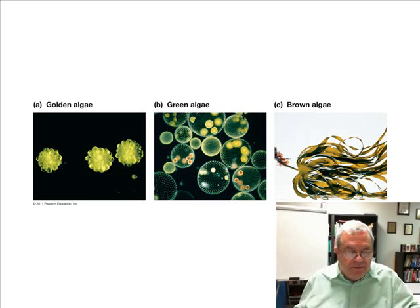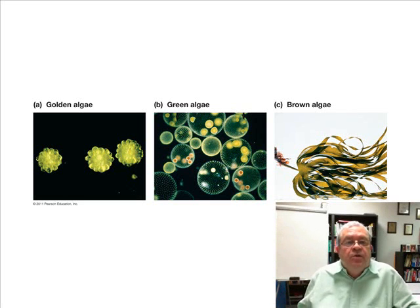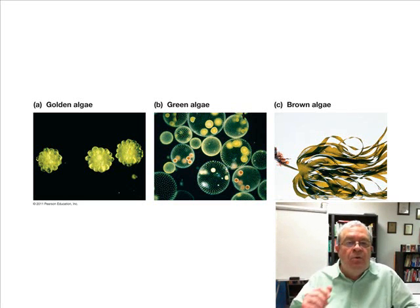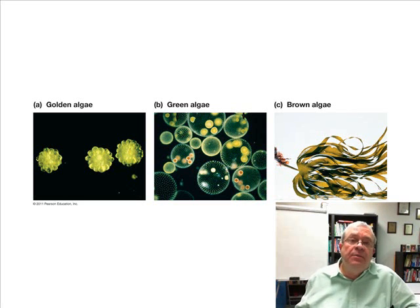What is the common term for photosynthetic protists? Here are three photosynthetic protists. What word do we see in common? It looks like algae. So the common term for photosynthetic protists is algae — we learned about algae a long time ago as well.